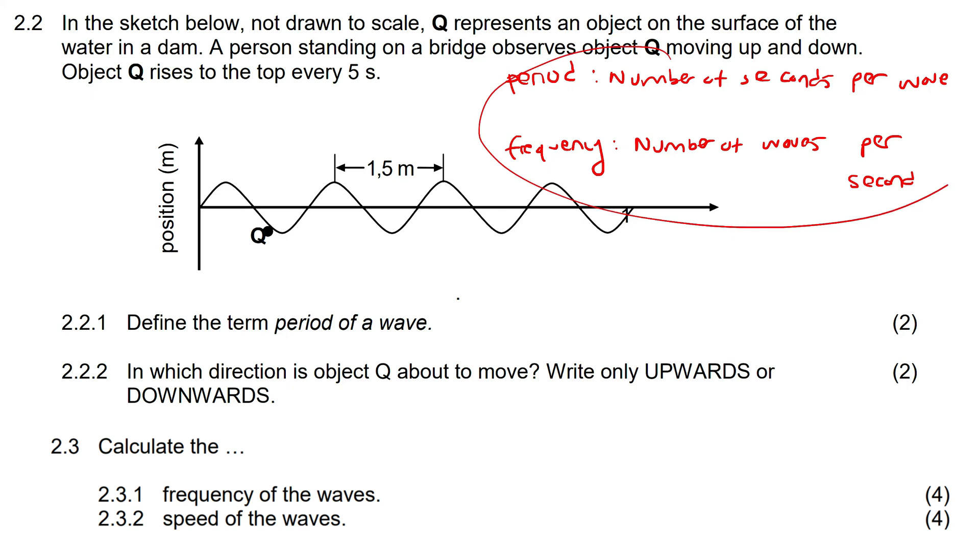So if you read those carefully for yourself, maybe pause and just read it, you would understand what it means. Frequency tells you how many waves are going to be in one second. So you stand there for one second, and you see how many waves there will be. Period says how many seconds do you need to make one wave?